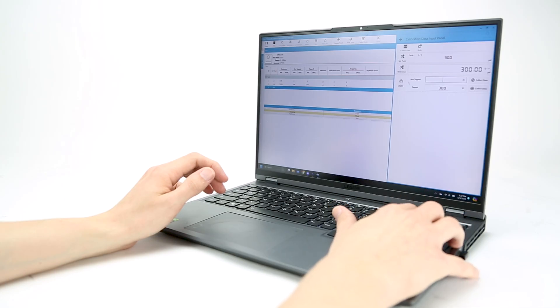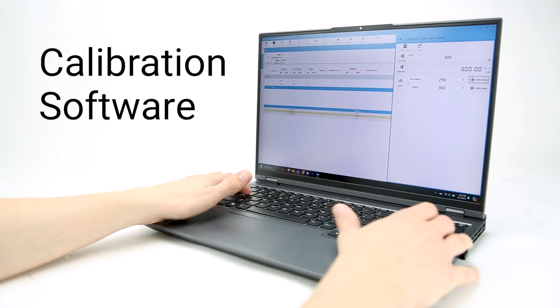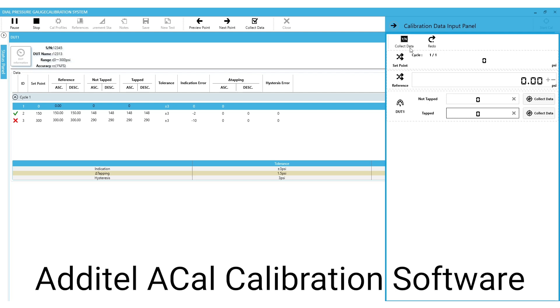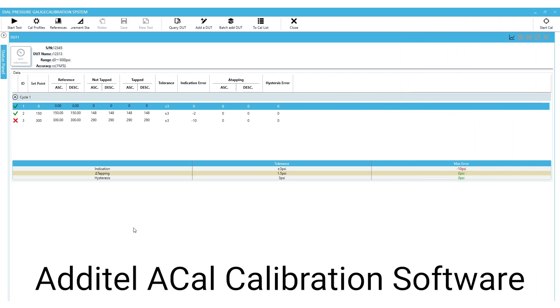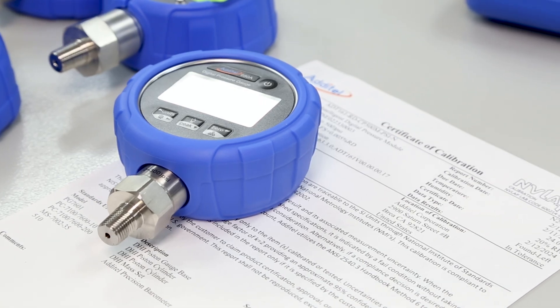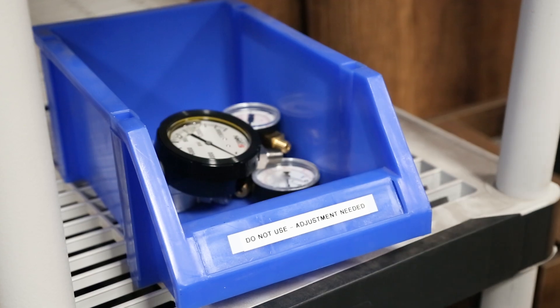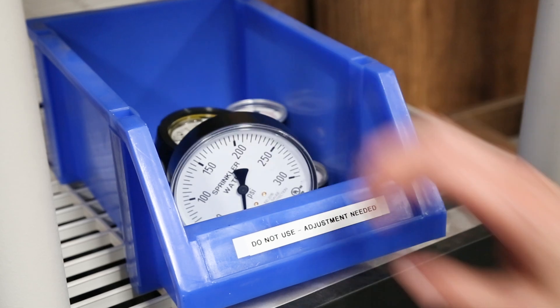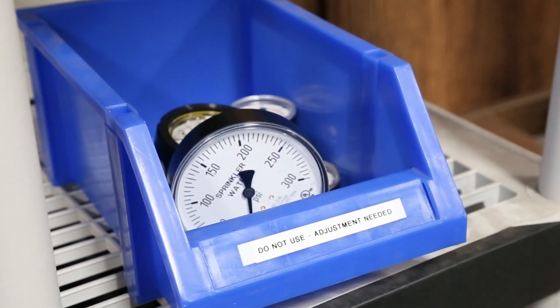That's it! The data you recorded can now be entered into a calibration software to generate a certificate. The software will calculate the error between the DUT and the reference across the pressure range to determine whether the gauge passed or failed calibration. If the gauge is found within tolerance, no action is needed. If the gauge is out of tolerance, it must be either replaced or adjusted according to the manufacturer's instructions.